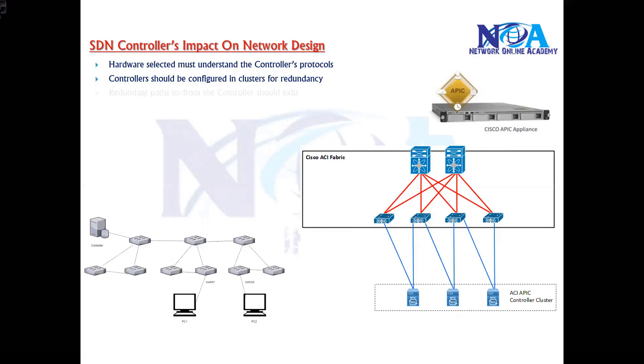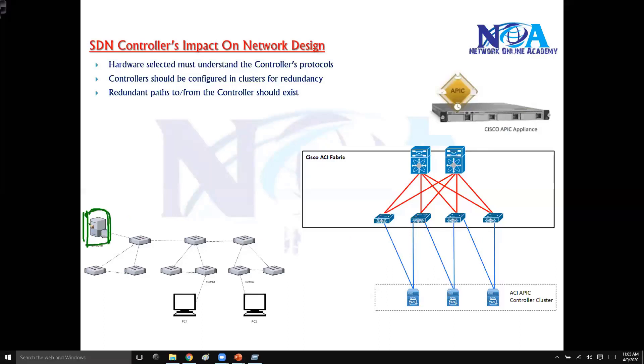The next thing is we need to plan redundant paths to the controller. Now, let's say this is your controller or group of controllers. If we have only one path connecting to that and that particular path fails, then again that will be a single point of failure. We always need to make sure that to reach these clusters we have redundant paths. This is one path, this is another path. There are multiple paths here you can see. If any one path fails, or even if multiple paths fail, you still have alternative paths to reach the controller.